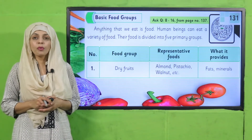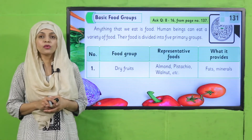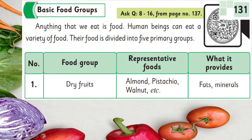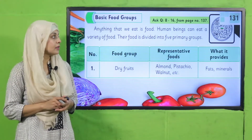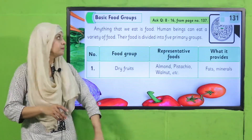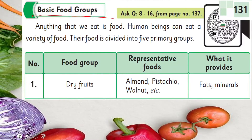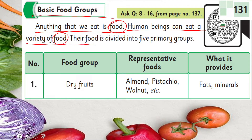My dear students, please open page number 131 in your GK3 books. Let's start reading - put your fingers where I read. 'Basic food groups: anything that we eat is food. Human beings can eat a variety of food. Their food is divided into five primary groups.' Anything we eat is called food, and human beings can consume a variety of food which is divided into five primary groups.